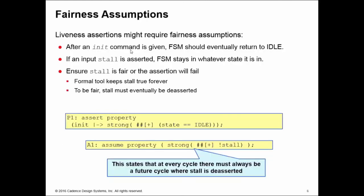With these kind of liveness properties, you often need something known as fairness assumptions. The example given here is if we've got a state machine in our design and let's say there's some signal in, it occurs, what we want to check is that the FSM should eventually return to idle at some future point.